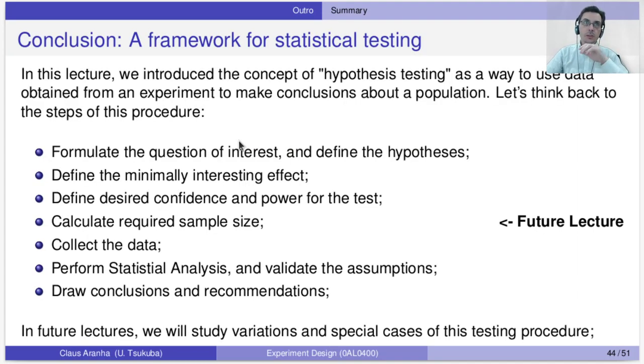The idea of this lecture was the concept of hypothesis testing. This is a way to use data that we obtain from an experiment to make conclusions about a population. Let's think back about the procedure of statistical testing. First, we formulate the question of interest, the thing that we want to research, and based on that we define the hypotheses that we are comparing. Then we define the minimally interesting effect, what is the minimum difference between the two hypotheses that we want to detect. Based on this information, we can define the confidence and the power of the test. And on this information, we can calculate the sample size. Now, calculation of sample size will be the topic of a future lecture.